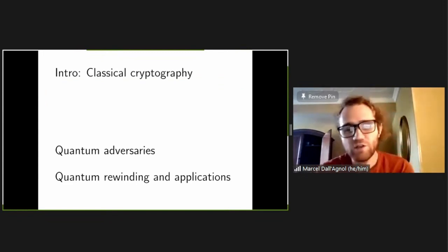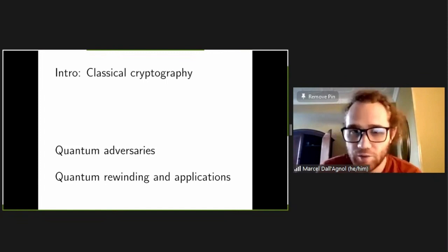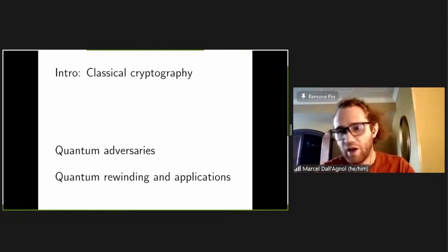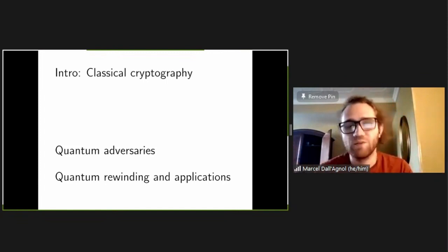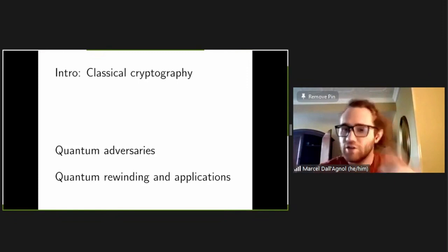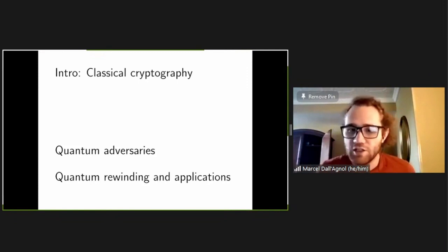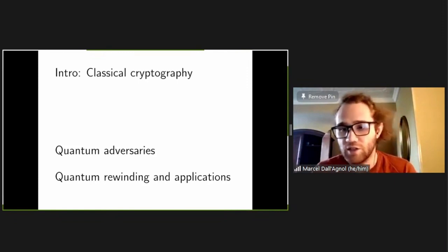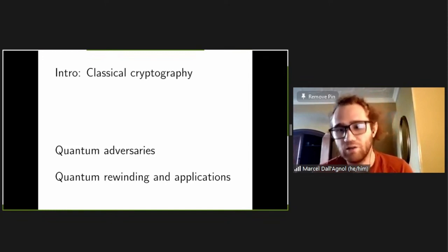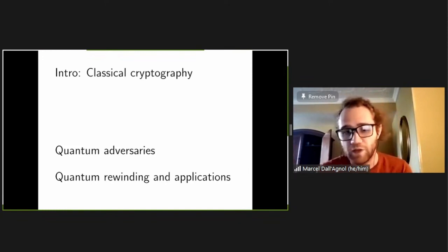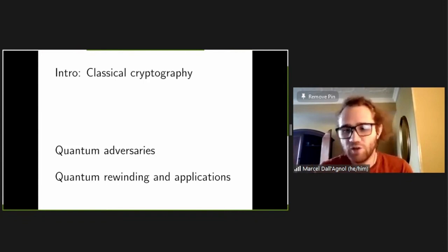I'll divide this into three parts. First, an introduction to some notions in classical cryptography where everything is classical. Then I'll mention some complications that arise when the adversary is quantum — even if the scheme is classical, certain things might break down. That's where one of our main results is. And then I'll mention a second set of results that has to do with quantum rewinding.